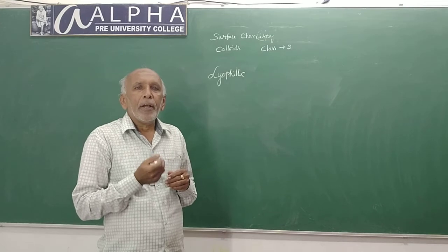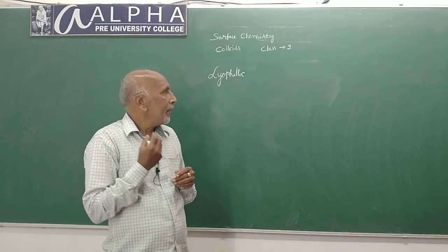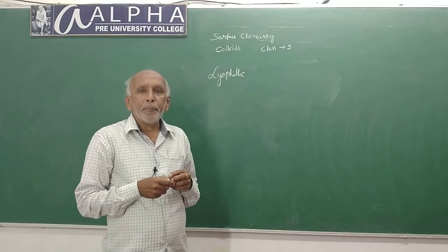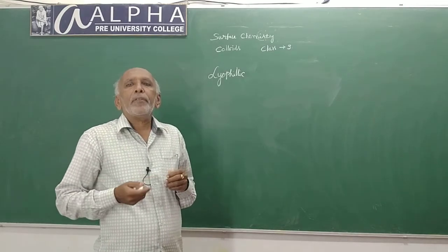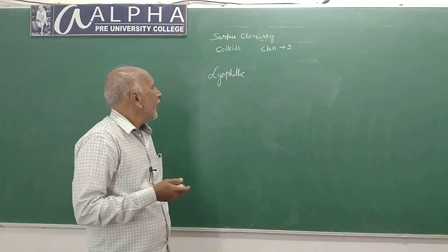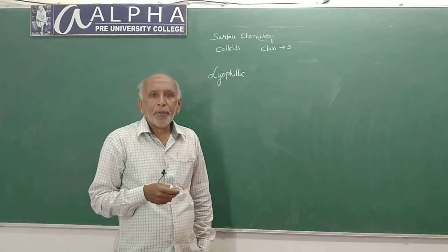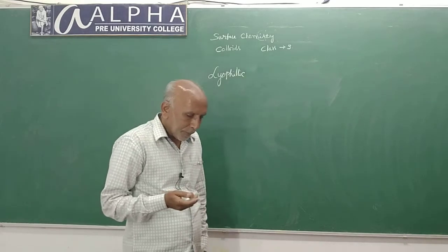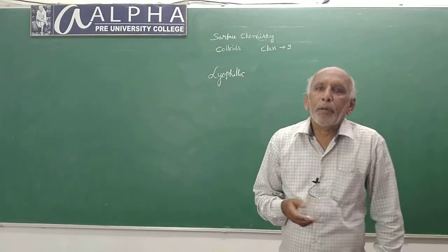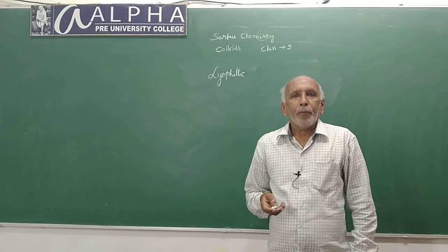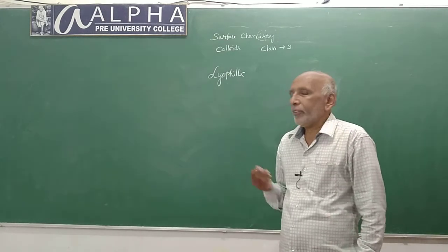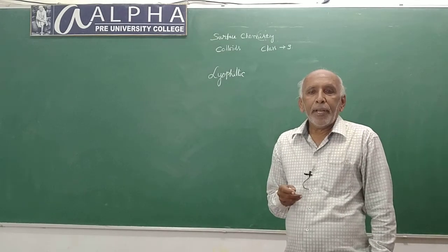Lyophilic colloidal systems are those in which the dispersive phase has high affinity towards the dispersion medium — if the dispersive phase loves the dispersion medium, that colloidal system is known as lyophilic. Examples for lyophilic sols include glue or gum sols, milk, gelatin sols, etc.